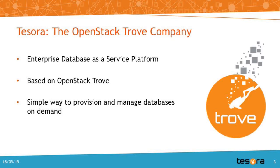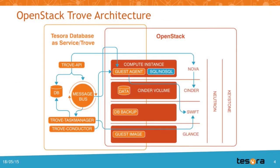I'm going to spend a few minutes talking about the architecture of Trove as it relates to OpenStack. Basically, one of the things to realize is that we sit on top of a whole bunch of other modules. You'll see on the slide there's Keystone, Neutron, Nova, Glance, Cinder, Swift. These things are all a core part of Trove that we leverage.